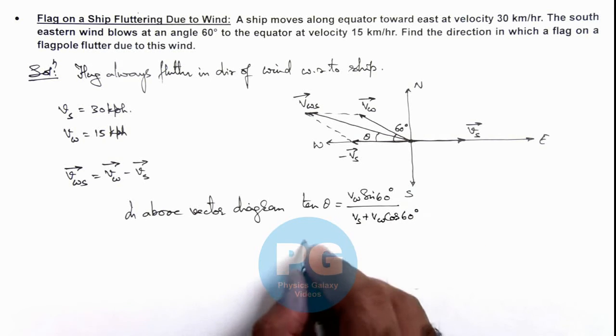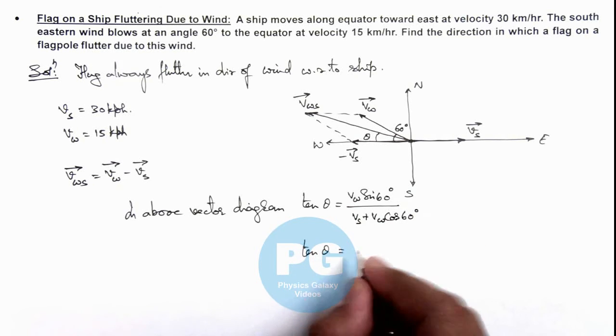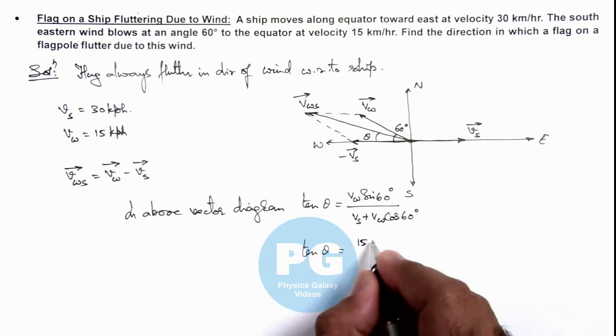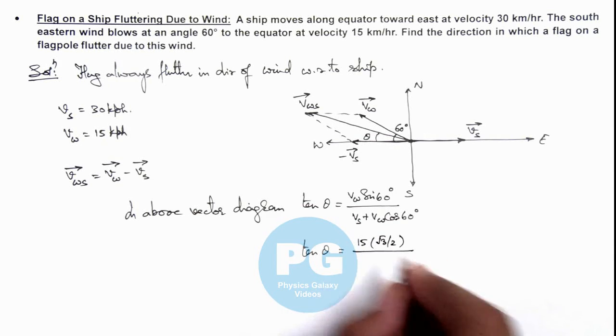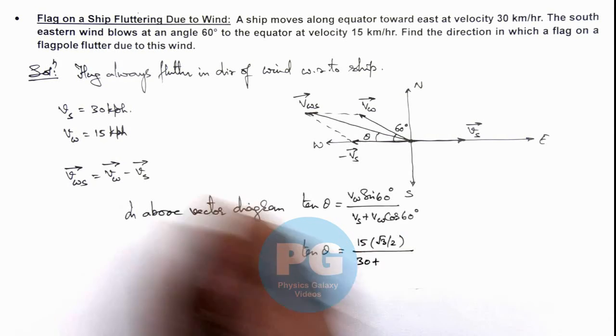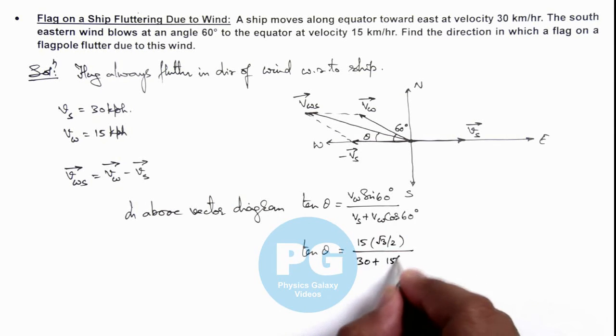This gives us the value of tan theta as Vw is 15 km/h, sin 60° is √3/2, divided by Vs is 30 plus Vw is 15, cos 60° is 1/2.